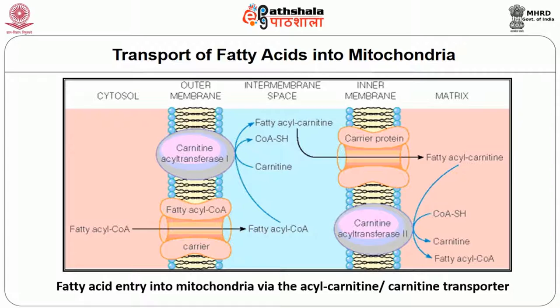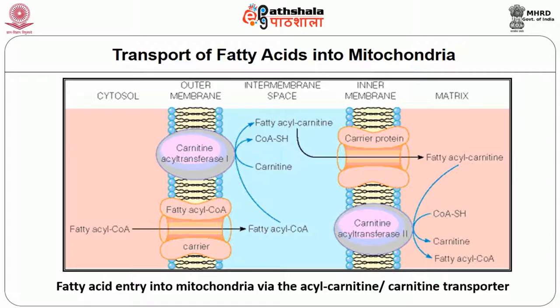Beta oxidation in the mitochondrial matrix: each cycle of beta oxidation liberates a two-carbon unit as acetyl-CoA through a sequence of four reactions. First, oxidation; second, hydration; third, oxidation; and fourth, cleavage.